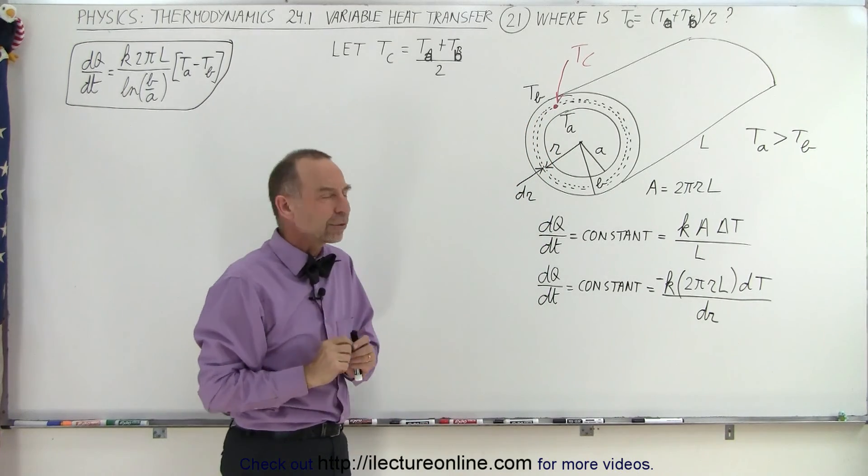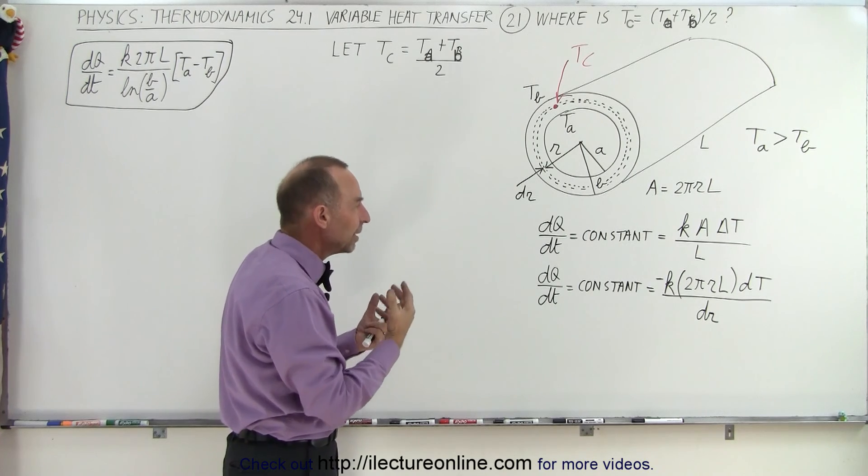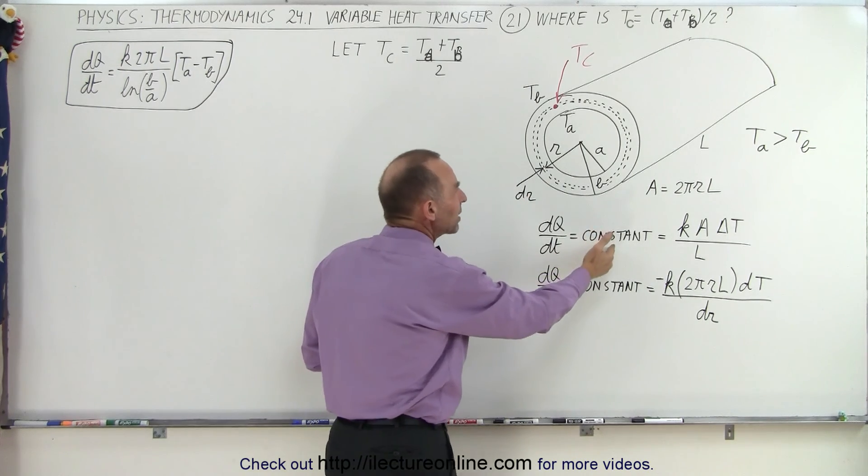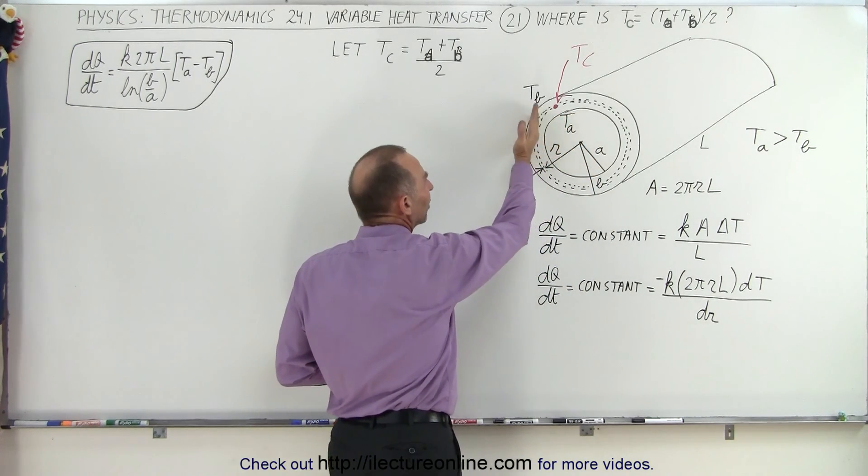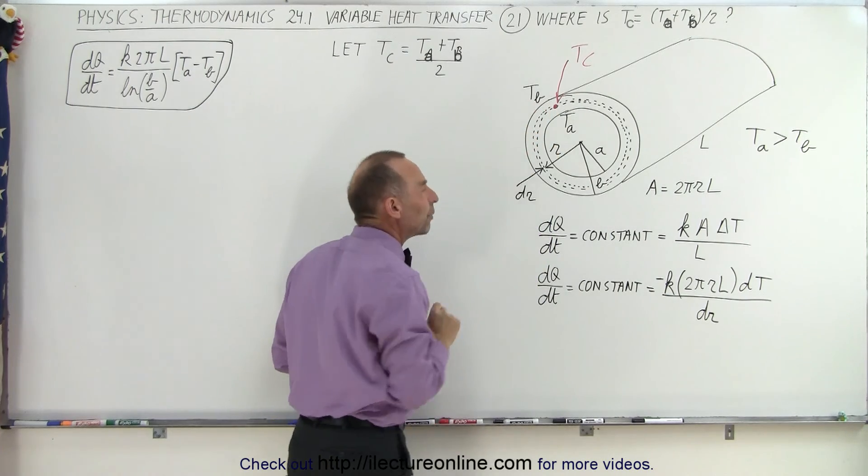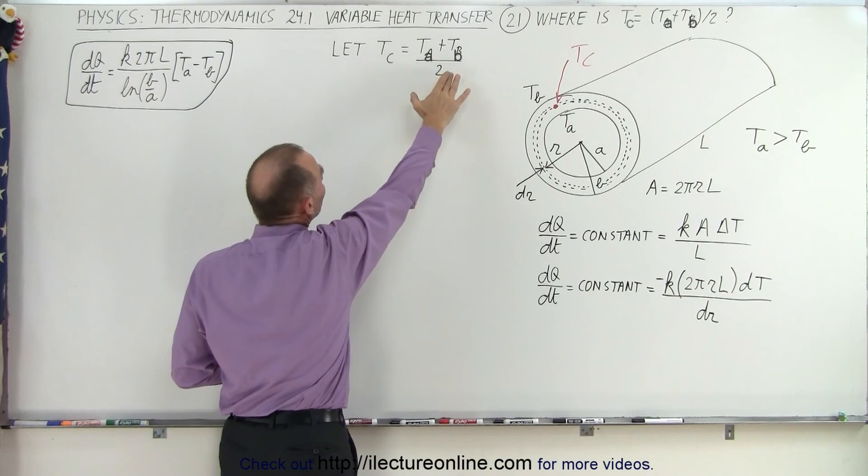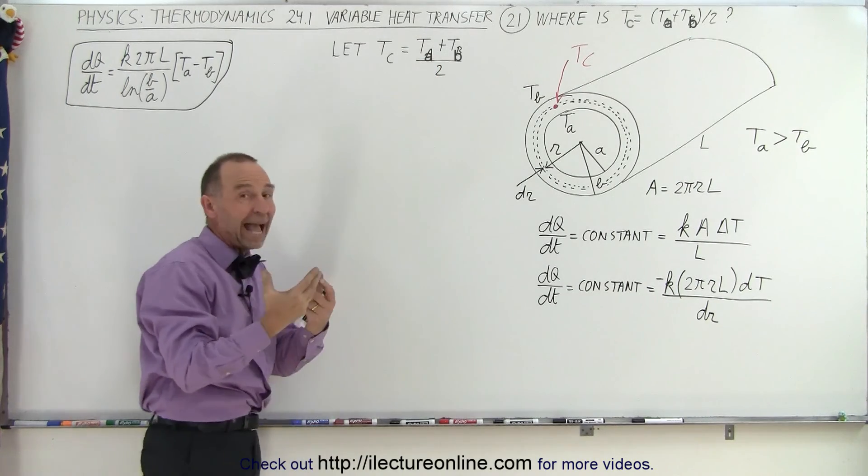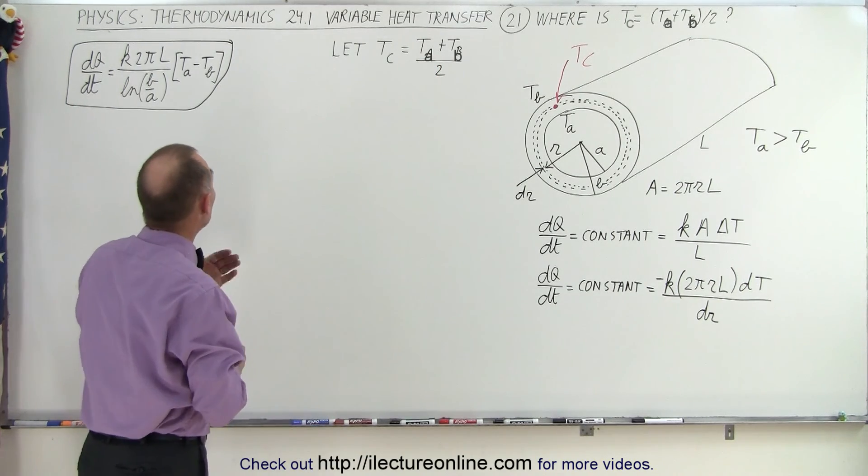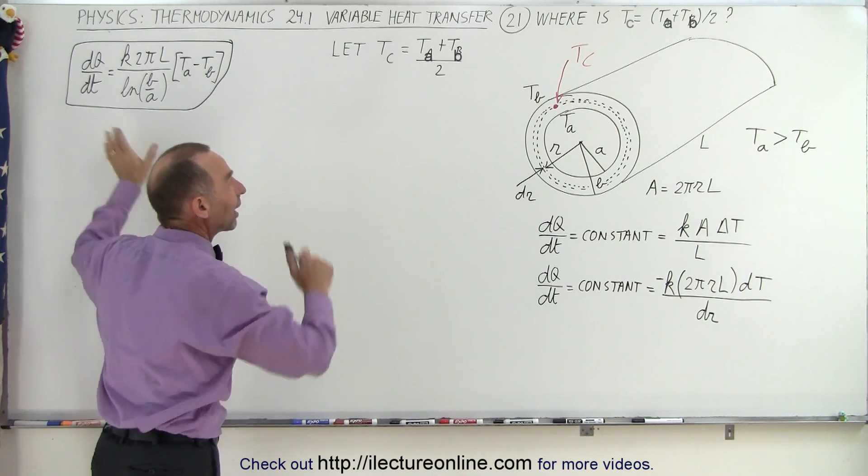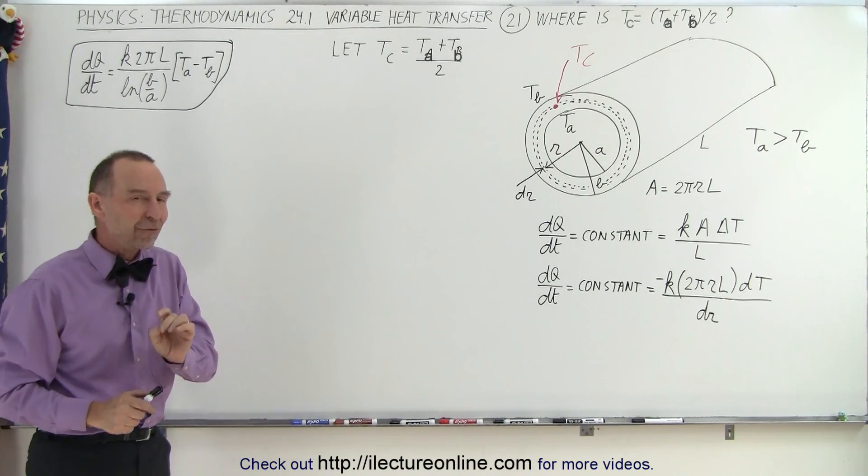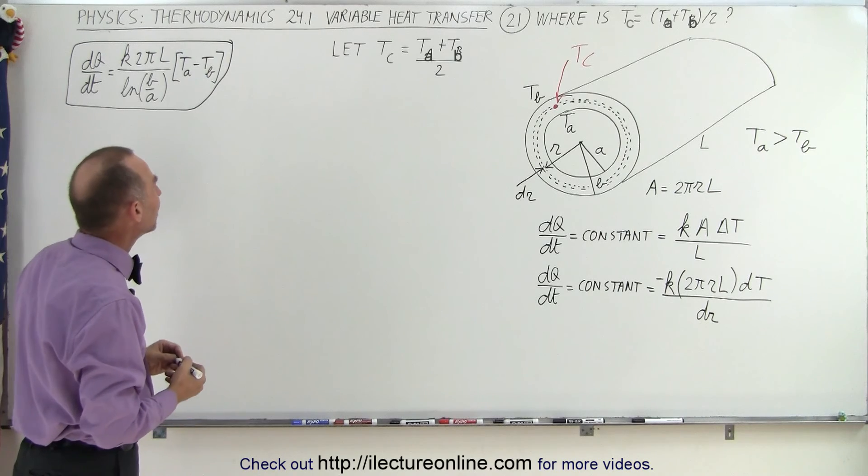Where exactly is that going to be? We're going to take the concept in mind that dQ/dt is going to be a constant, so the heat flow across this is going to be constant regardless of where we are. And since Tc is defined as Ta plus Tb divided by 2, that would be the halfway point between the two, we can then use this equation to try and figure out where that temperature is exactly halfway between Ta and Tb.